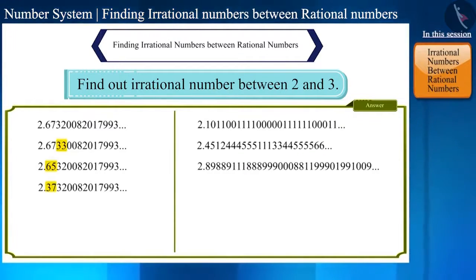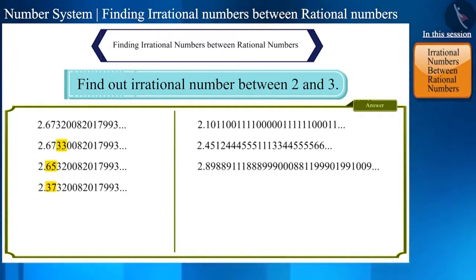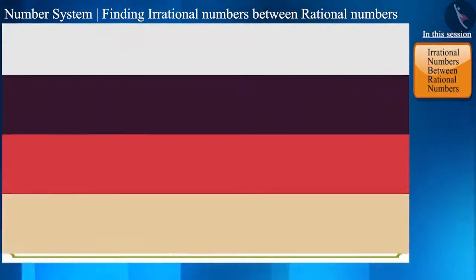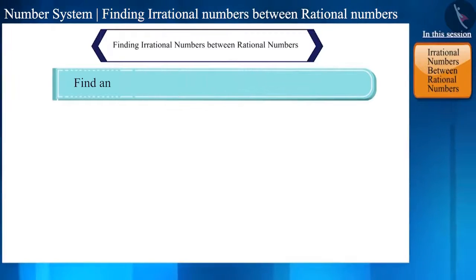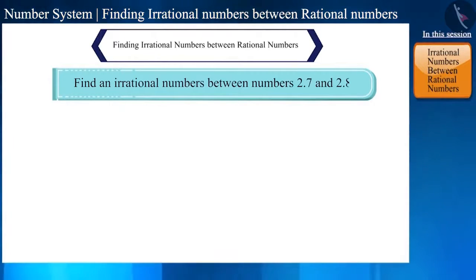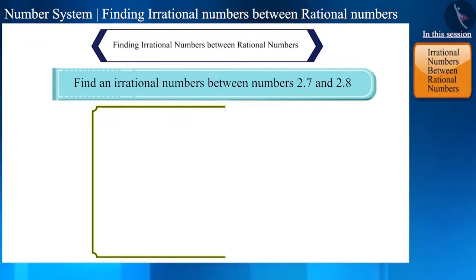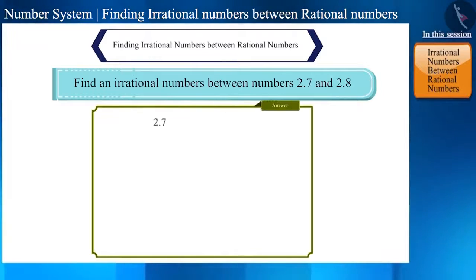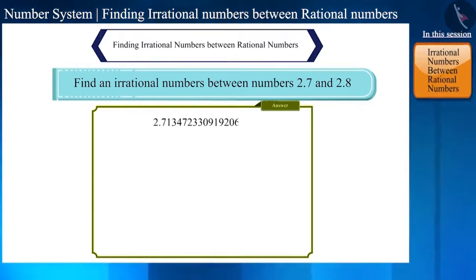The interval between two and three is very large, but we can do this with even smaller intervals. For example, find an irrational number between 2.7 and 2.8. Here we can write any number after 2.7 that is neither repeated nor ends.